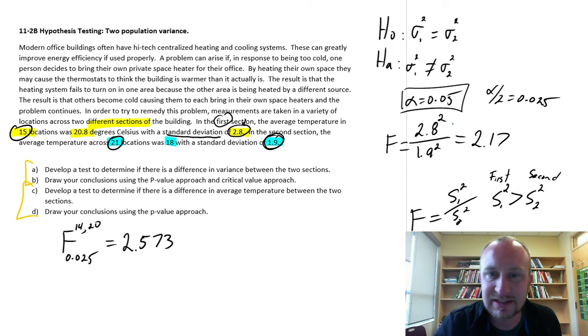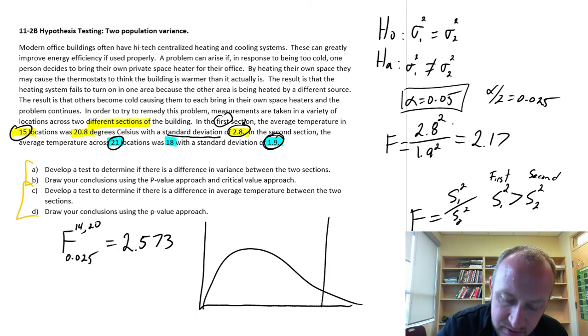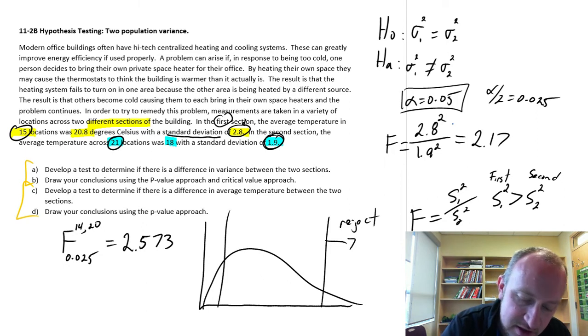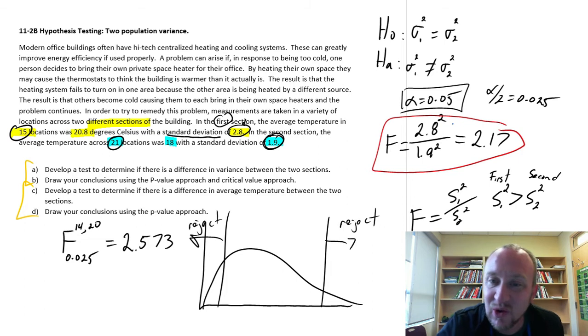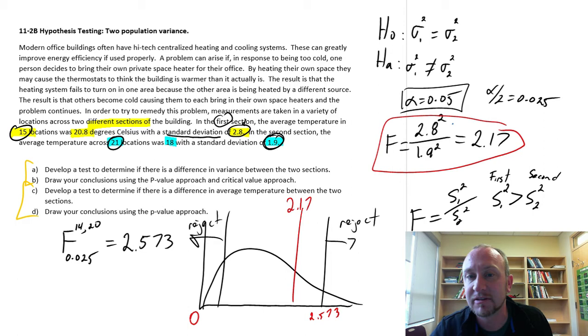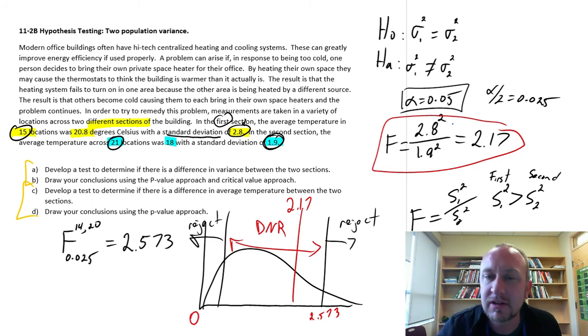So how can we use this? Well, it's very similar. When we're looking at that distribution, whatever its shape, we're going to reject if our test statistic is too large, reject if our test statistic is too small. Now, because of how we have formulated our test statistic, we know it's formulated in a way that it will always fall to the upper side of the distribution. So here that critical value is 2.573. Our test statistic is 2.17. Given that zero is down here, 2.17 is somewhere in this space here. So this falls into our do not reject space, using the critical value approach.